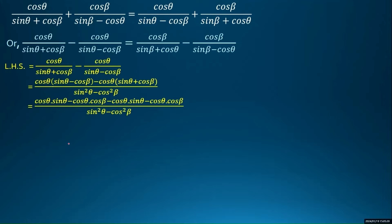Now, terms with the same value but different signs can be cancelled. Here, cos θ · sin θ positive and cos θ · sin θ negative cancel each other. For the remaining terms, both are negative, so they are added, giving us 2cos²θ in the numerator and sin²θ − cos²θ in the denominator.